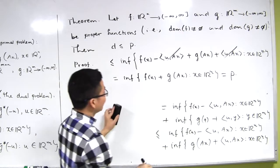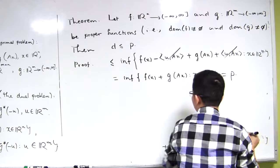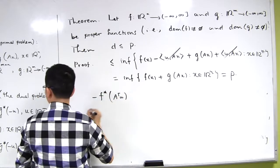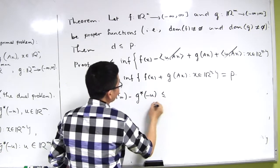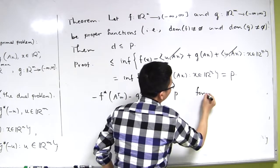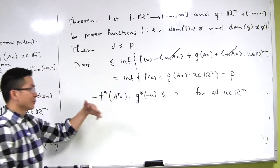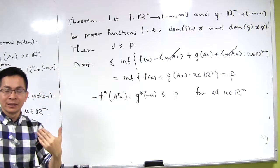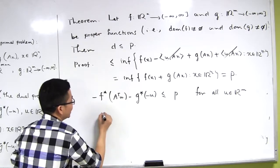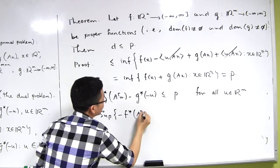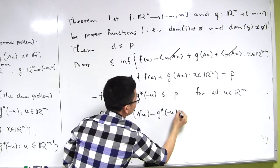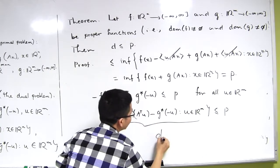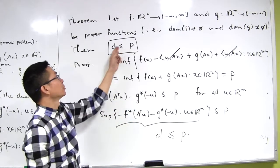So let me summarize the upper estimate. We get: minus f*(A^T u) minus g*(−u) is always less than or equal to p, and this is true for all u in R^m. Now if we take the supremum of the left-hand side with respect to u in R^m, we get exactly the optimal value of the dual problem. So the supremum of minus f*(A^T u) minus g*(−u) over u in R^m is less than or equal to p. This is exactly d. So we have completed the proof that d is less than or equal to p.